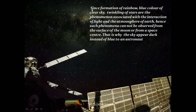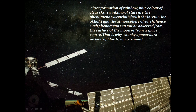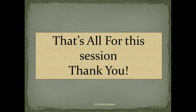Since the formation of rainbows, the blue color of the clear sky, and the twinkling of stars are phenomena associated with the interaction of light and the Earth's atmosphere, such phenomena cannot be observed from the surface of the moon or from a space station — that is why the sky appears dark instead of blue to an astronaut. That's all for this session. Thank you very much.